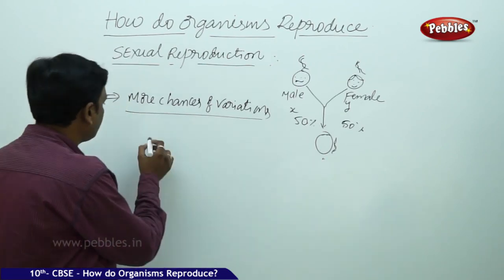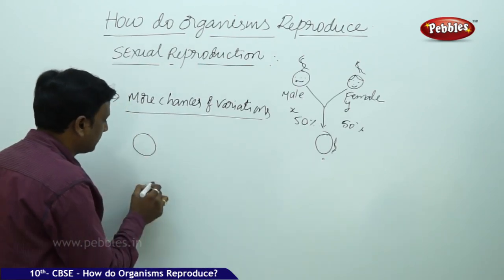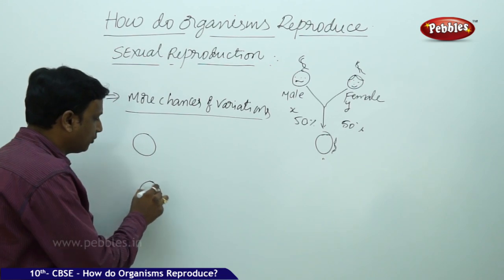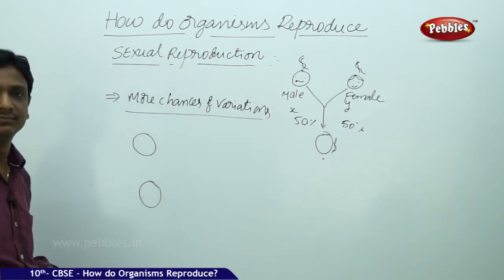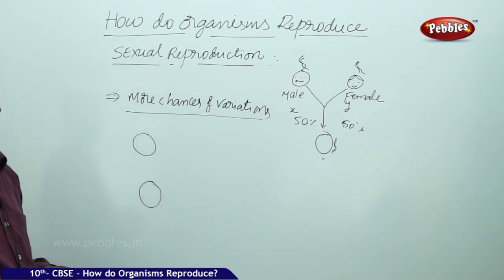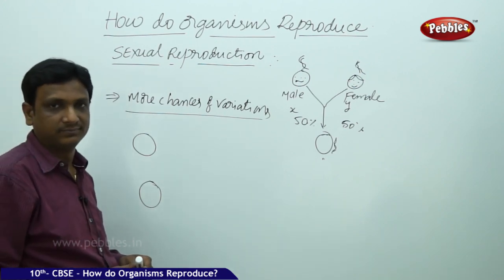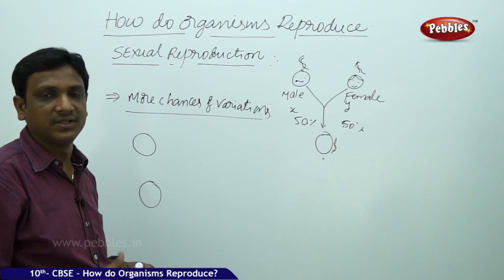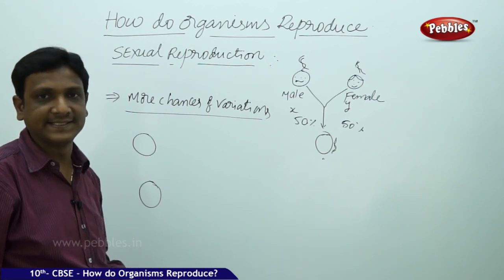In sexual reproduction, there is a fusion of male and female gametes. The cells are duplicated, divided, and produced at the young ones, producing the young ones.